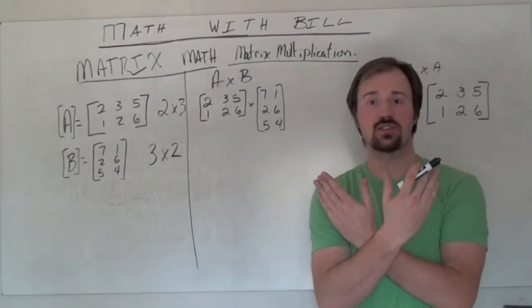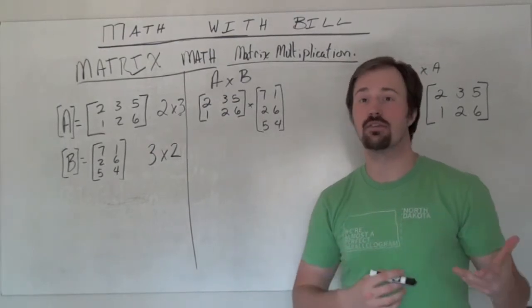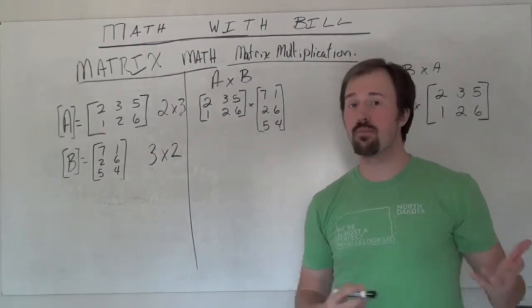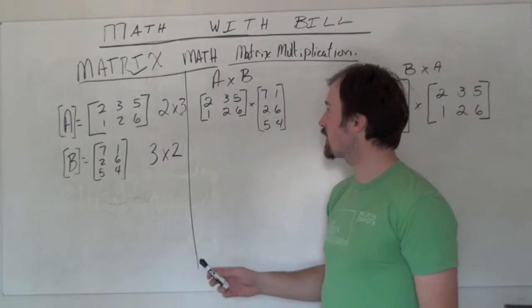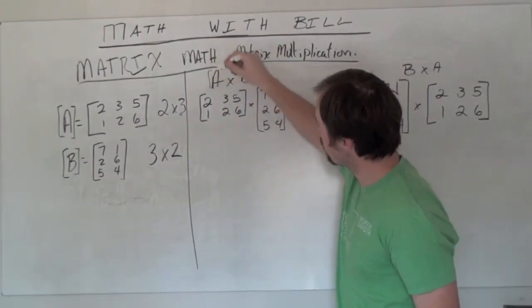So we can't take and switch things. It's not like regular numbers. 3 times 5 and 5 times 3 are both 15. But in this case, we're going to be looking at two matrix multiplication sets.